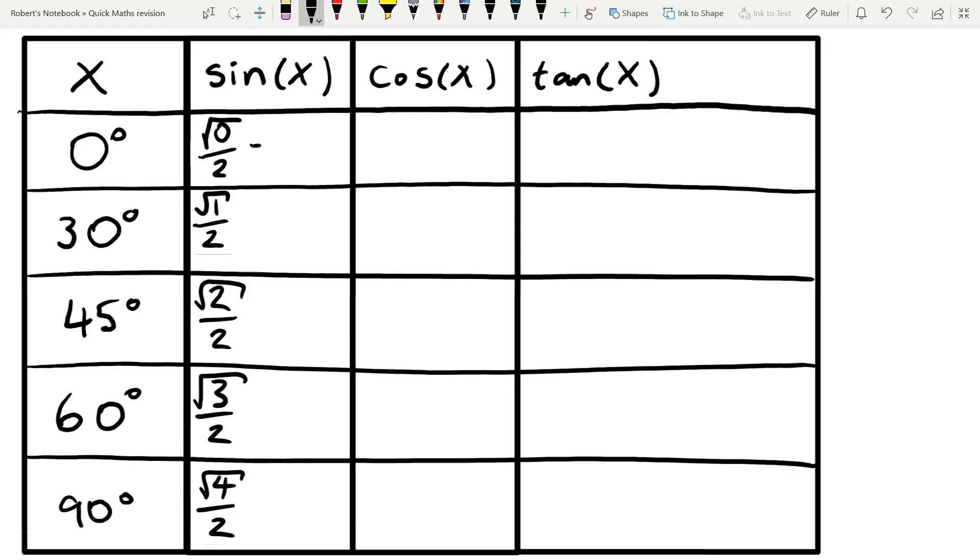And then we can simplify each of these. So root 0 is 0, which divided by 2 is 0. Square root of 1 is 1, so the answer to this is 1 half. Then root 2 over 2 is root 2 over 2, we can't simplify that any further, and the same goes for root 3 over 2. Root 4 over 2 is 2 over 2, which is, of course, 1.